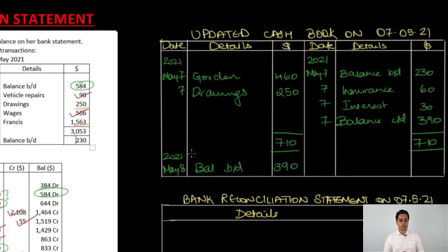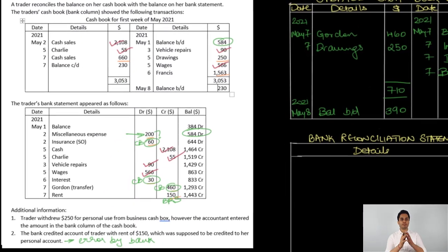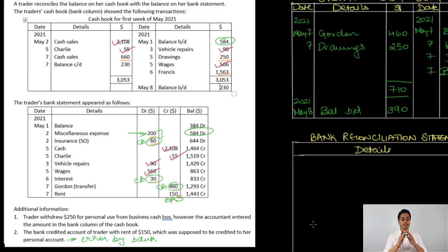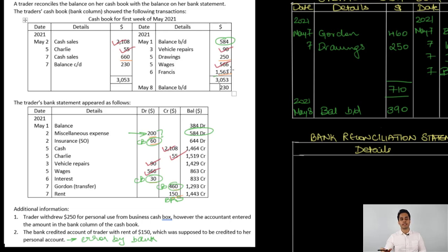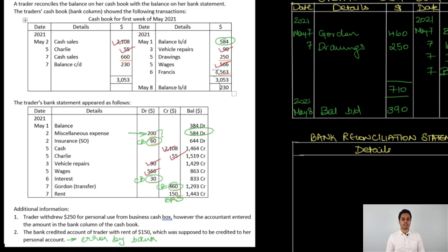Let us now start with our bank reconciliation statement. There are two kinds of transactions in a bank reconciliation statement. First are timing differences — these are transactions recorded in the cash book but not yet by the bank. There are two types: unpresented checks, where the business has issued a check to a supplier but the supplier has not yet presented it to the bank; and uncredited deposits, where the business has deposited a check but the clearing process has taken time. Apart from these, we also have the bank error from adjustment two, which will also go in the bank reconciliation statement.